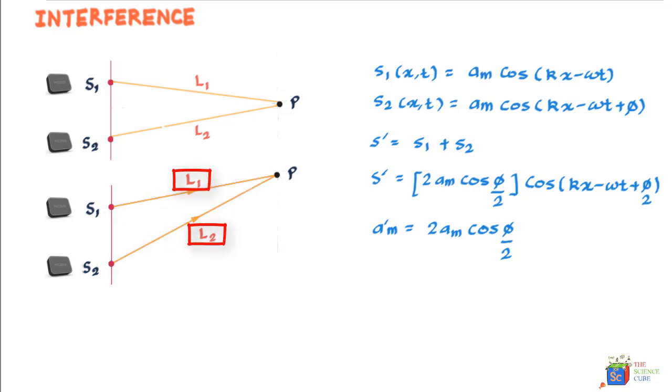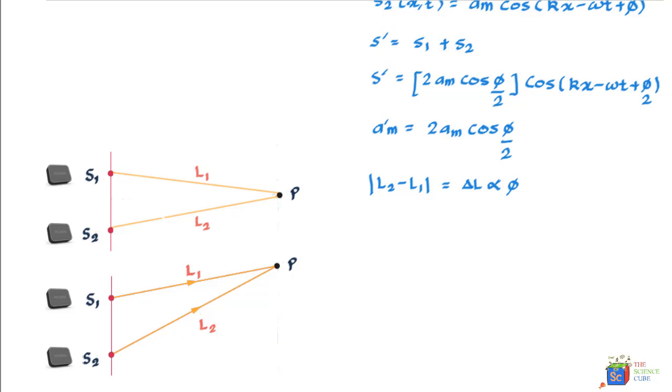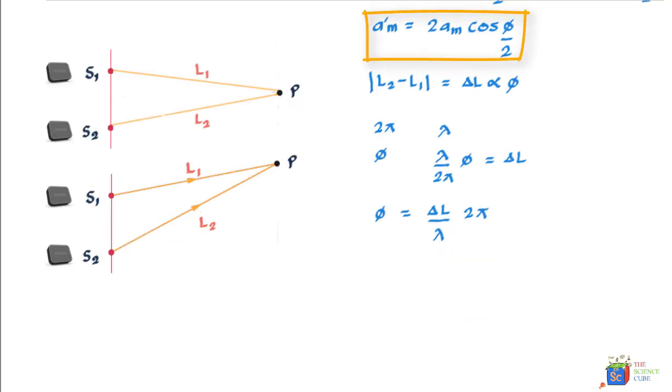We can write that |L₂ - L₁| is proportional to φ. We take |L₂ - L₁| as equal to ΔL, which is proportional to φ. How do we relate φ to ΔL? It's quite simple: a phase difference of 2π corresponds to a wavelength of λ. Then a phase difference of φ would correspond to a length of (λ/2π)φ, which equals ΔL. Or we can say φ = (ΔL/λ) × 2π.